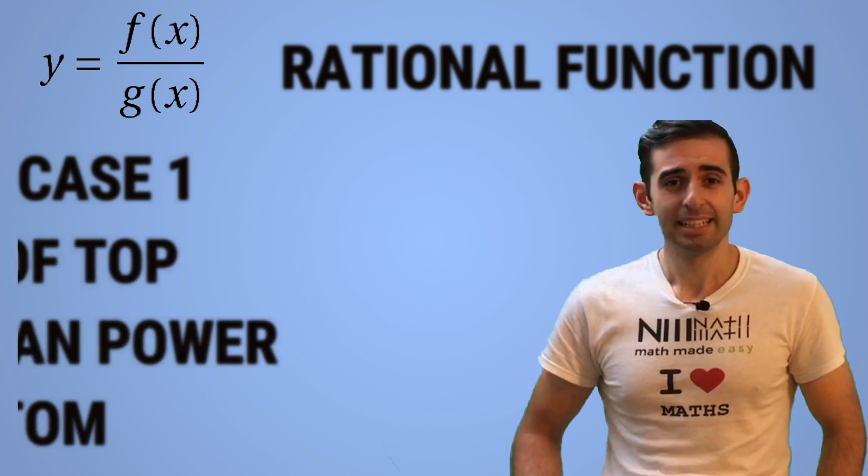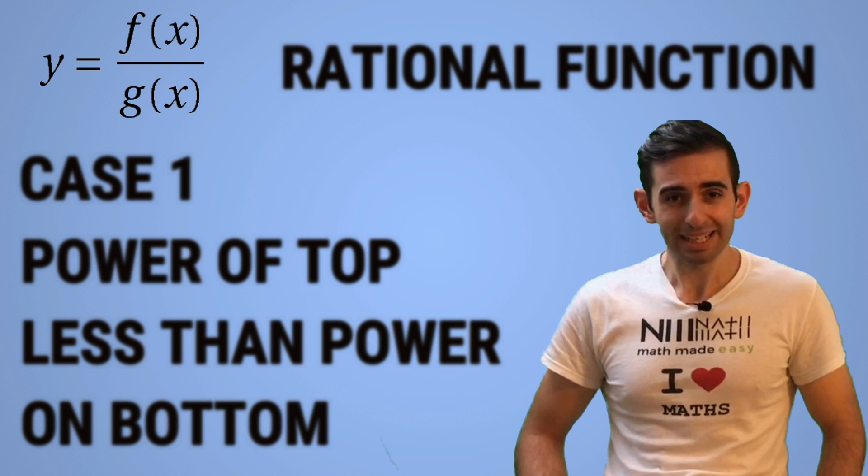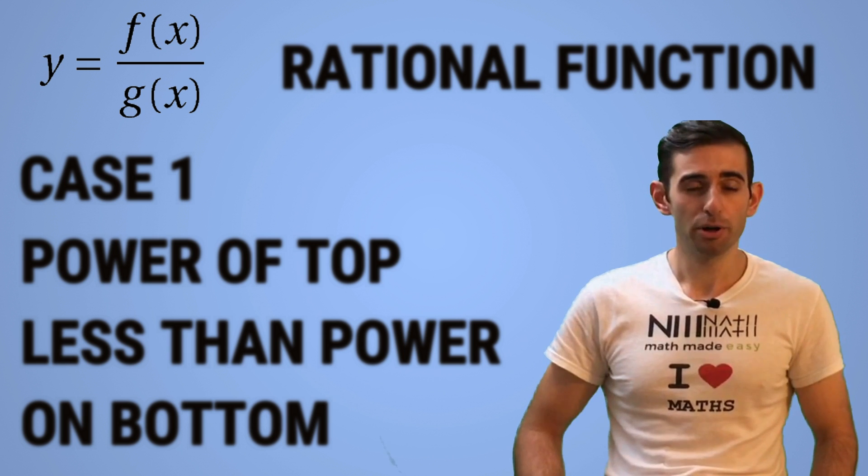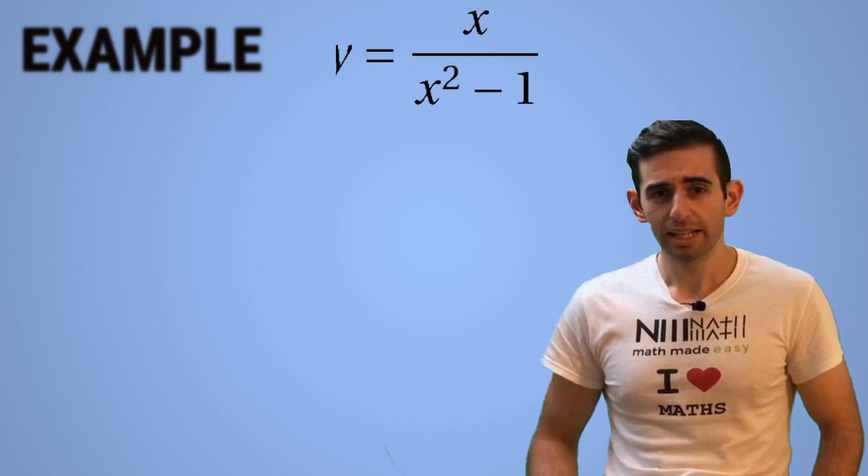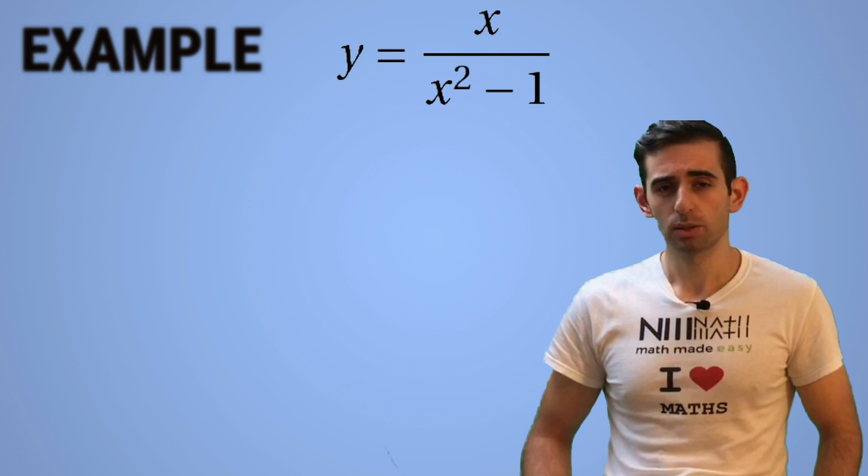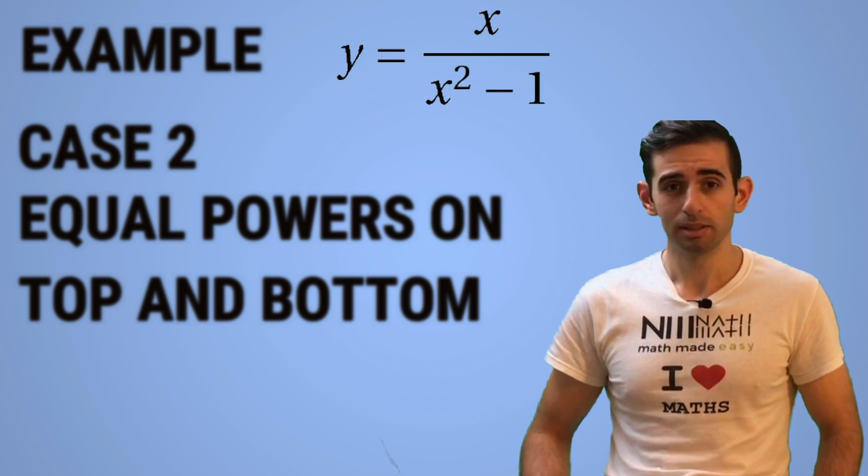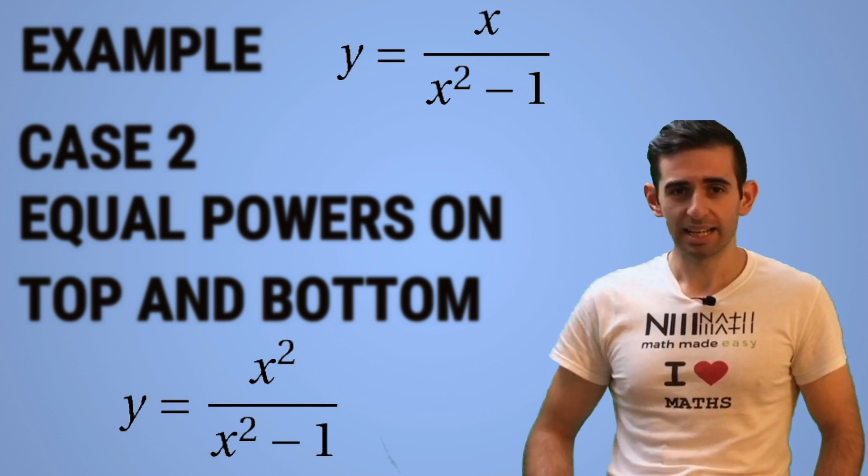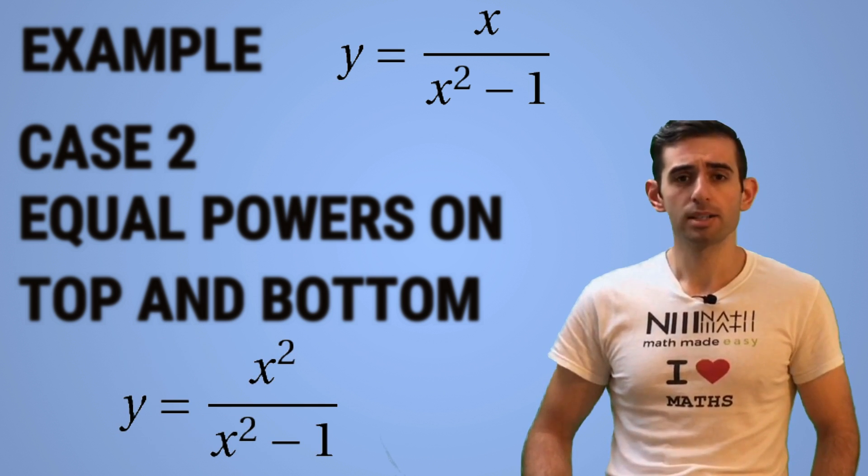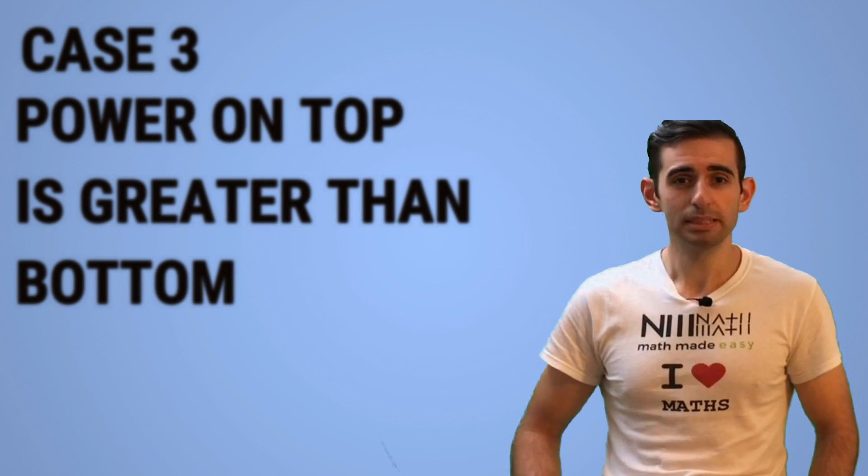The first case is when the power on top is less than the power on the bottom, such as y equals x over x squared minus one. Case two is when the powers on top and bottom are the same, such as y equals x squared over x squared minus one. And case three is when the power on top is bigger than the bottom.